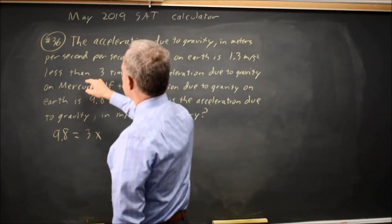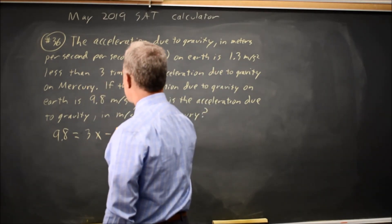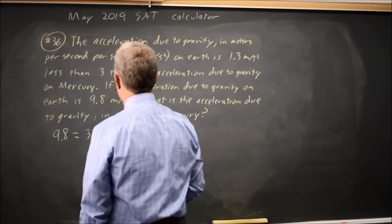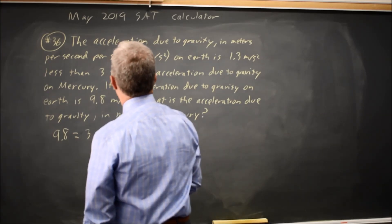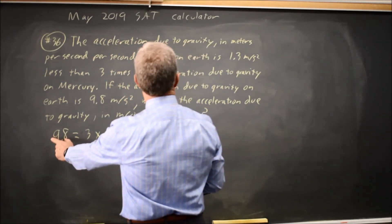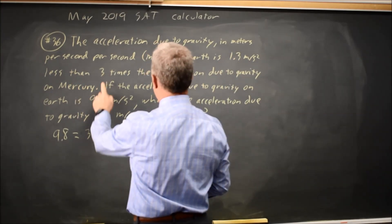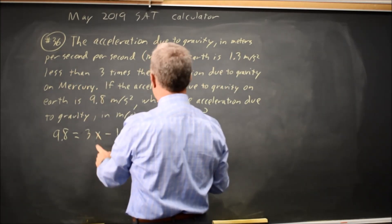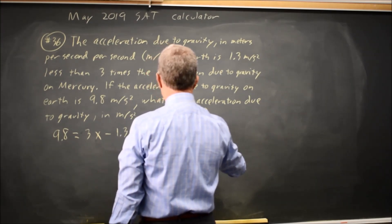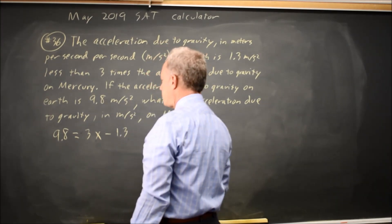1.3 meters per second less than, so 3x minus 1.3. So the acceleration on Earth is 1.3 less than 3 times the acceleration on Mercury, so x equals Mercury, which is what we want to find.